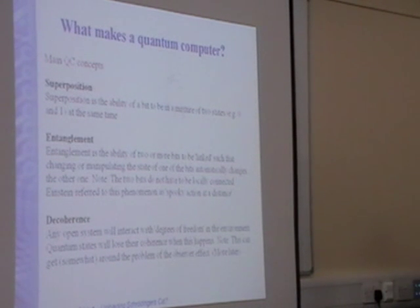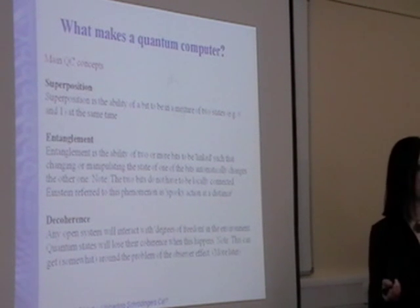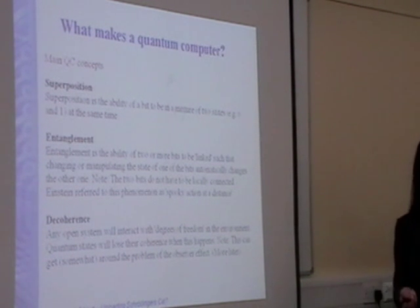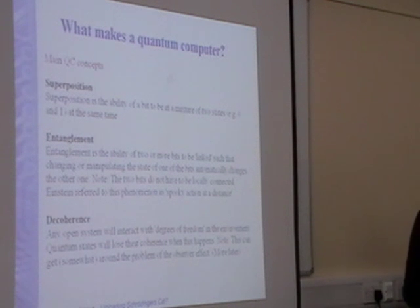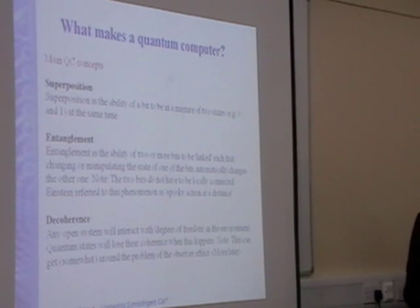The first one is superposition. This means you take a classical bit, which is a zero or a one in digital computing. And superposition is the ability of that bit to be in two states at the same time. So a mixture of zero and a mixture of one at the same time.